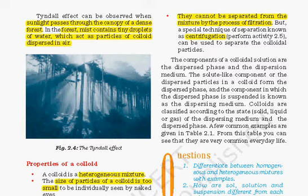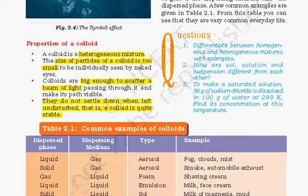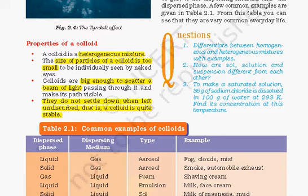In centrifugation, you take a solution in a container and rotate it at very high speed. A centrifugal force applies on it and separates the particles. Examples of common colloids: liquid in liquid or gas in liquid dispersed in gas is called an aerosol — for example, fog, cloud, and mist. Solid dispersed in gas is also an aerosol — for example, smoke and automobile exhaust. Gas in liquid forms foam — for example, shaving cream and soap foam. Liquid in liquid forms an emulsion — for example, milk and face cream.